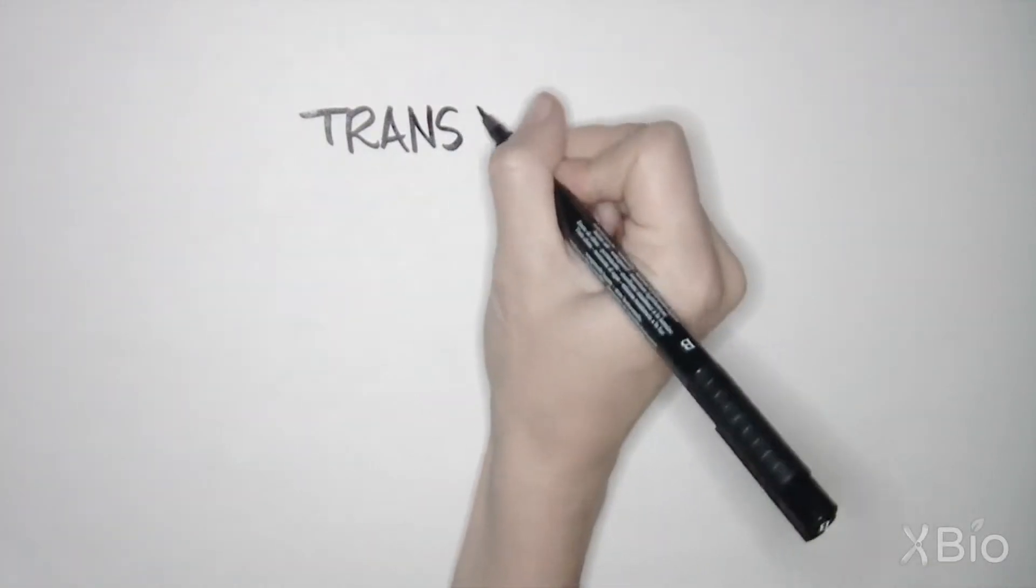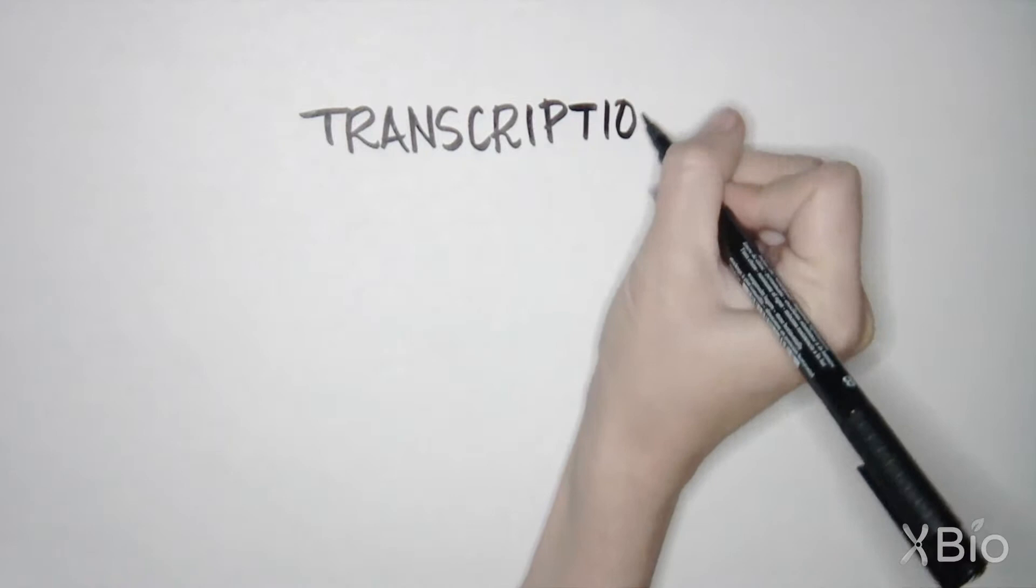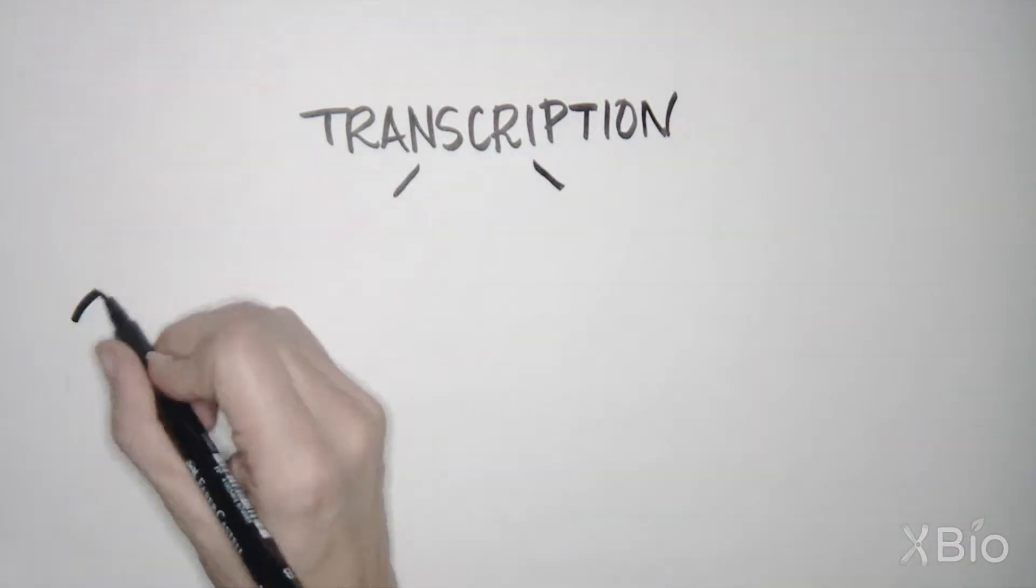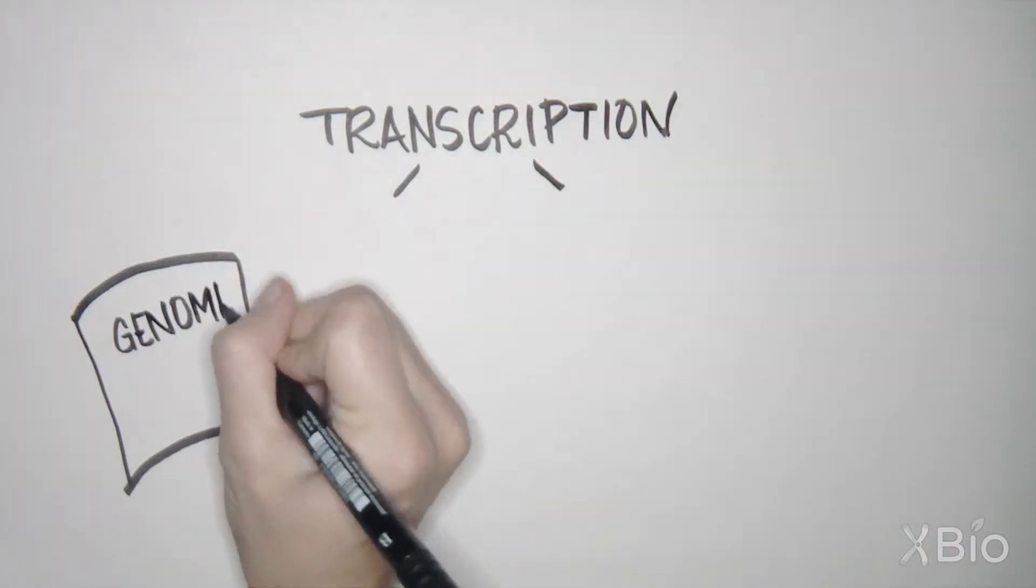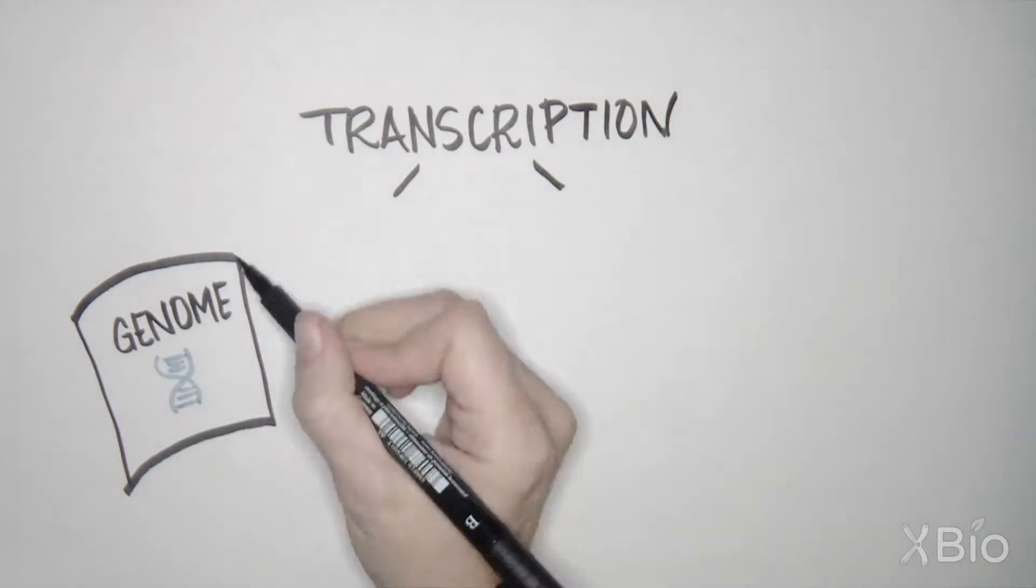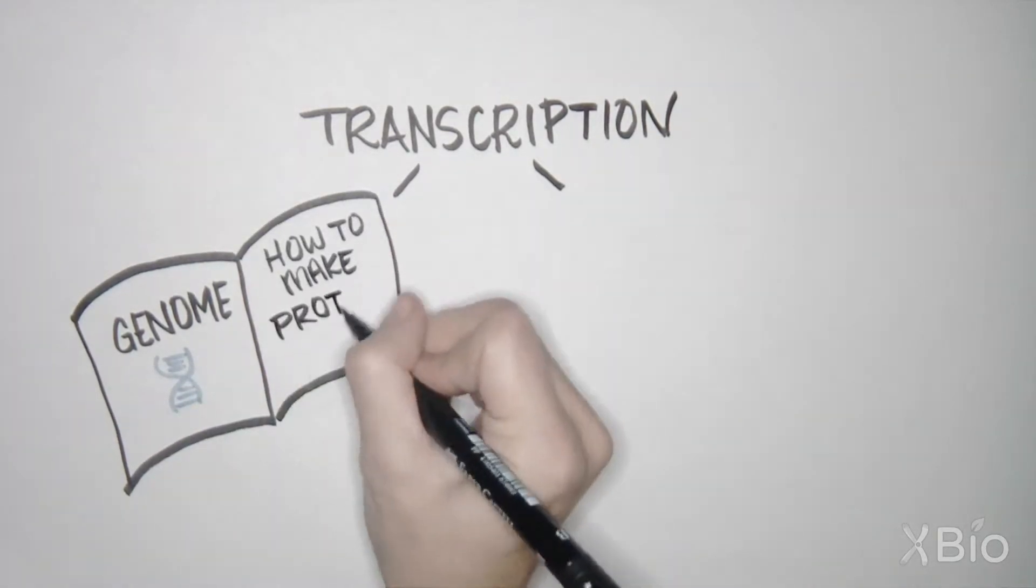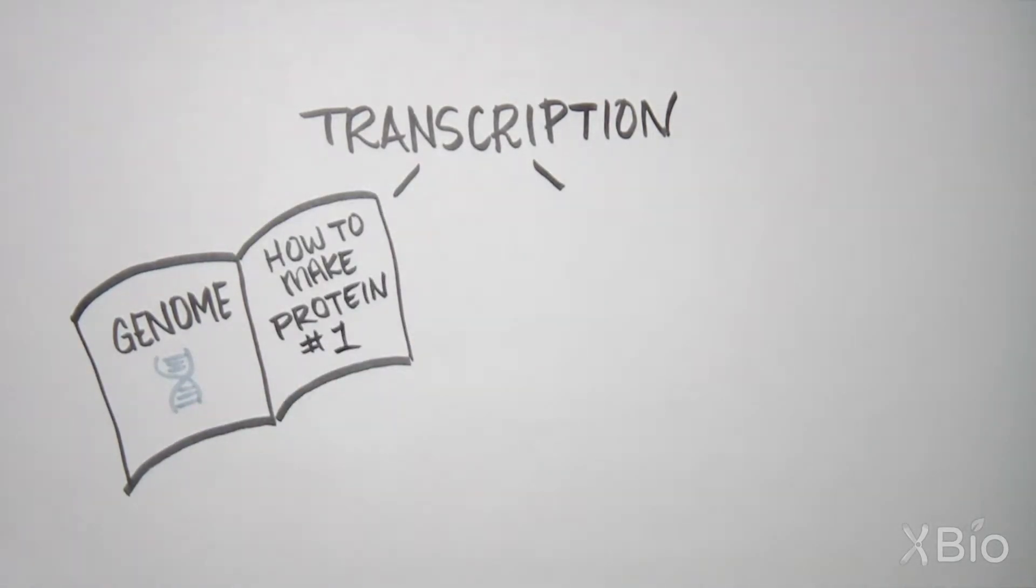Transcription is the first step of making a protein from DNA instructions. Our genome is made of DNA. The genome is like a huge book full of instructions, and a gene is a set of instructions for making a single protein.